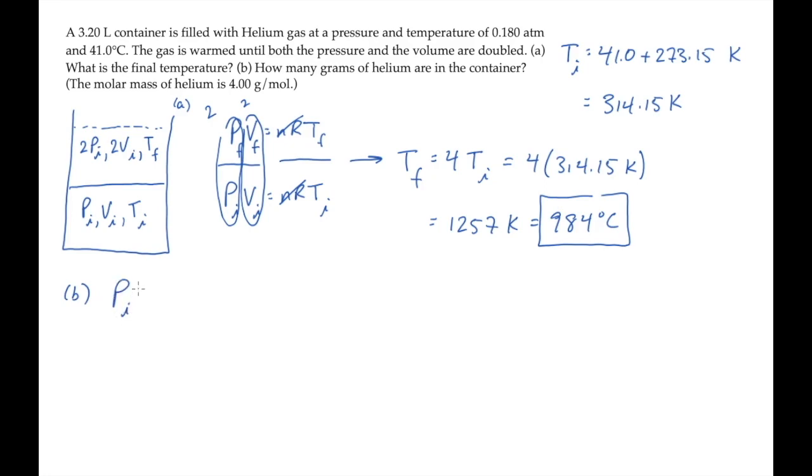We'll find the number of moles using the ideal gas law, PV equals nRT, solving it for the number of moles n, and that equals PV over RT. The pressure and the volume are given in units of atmospheres and liters, so it's useful to have the gas constant R in those units.